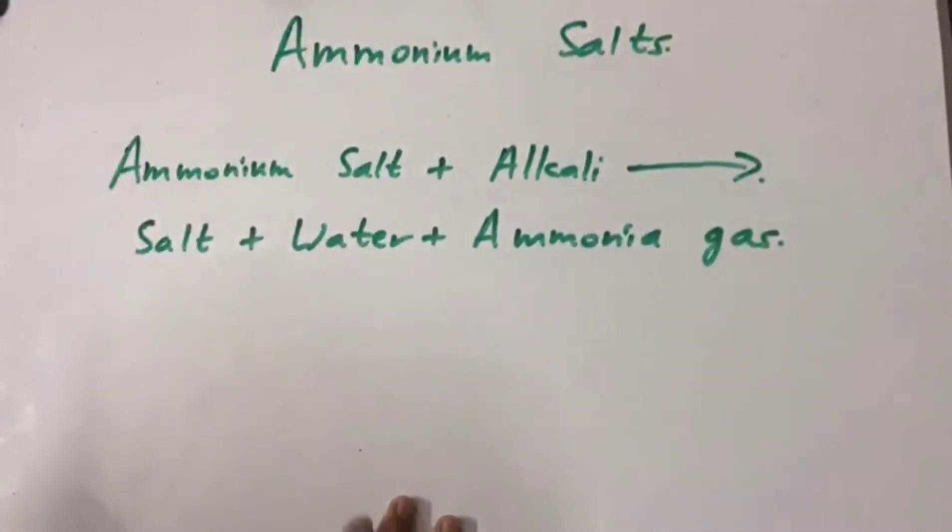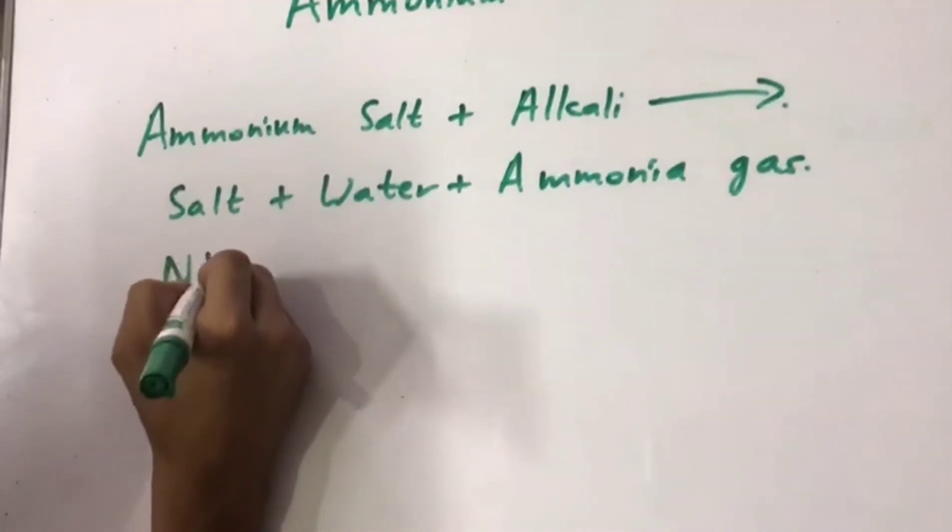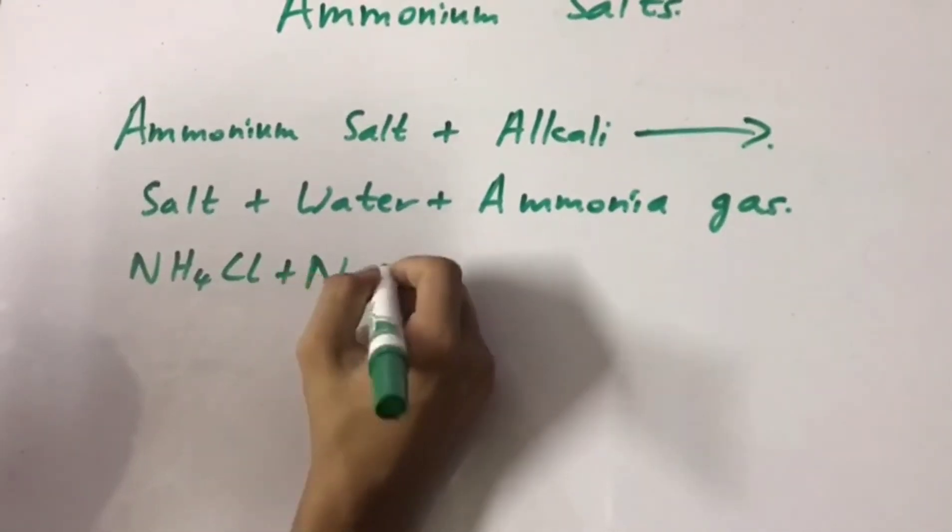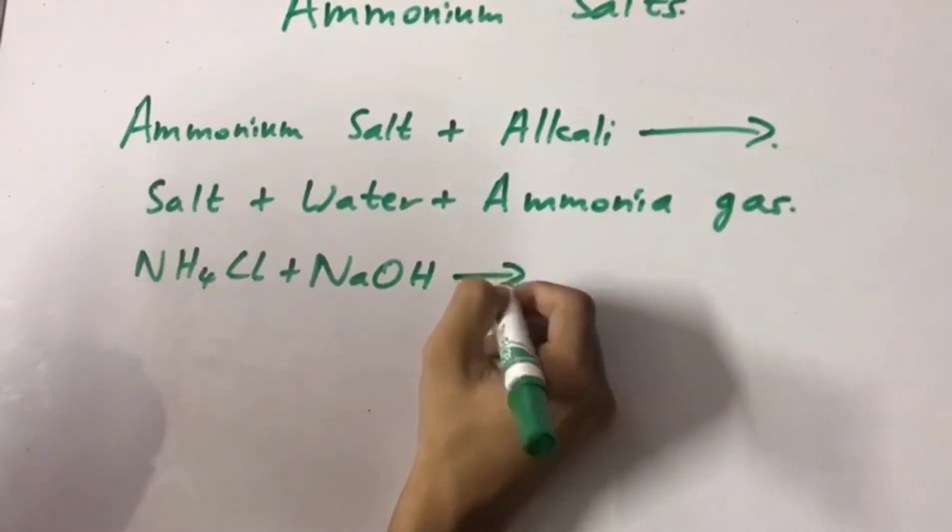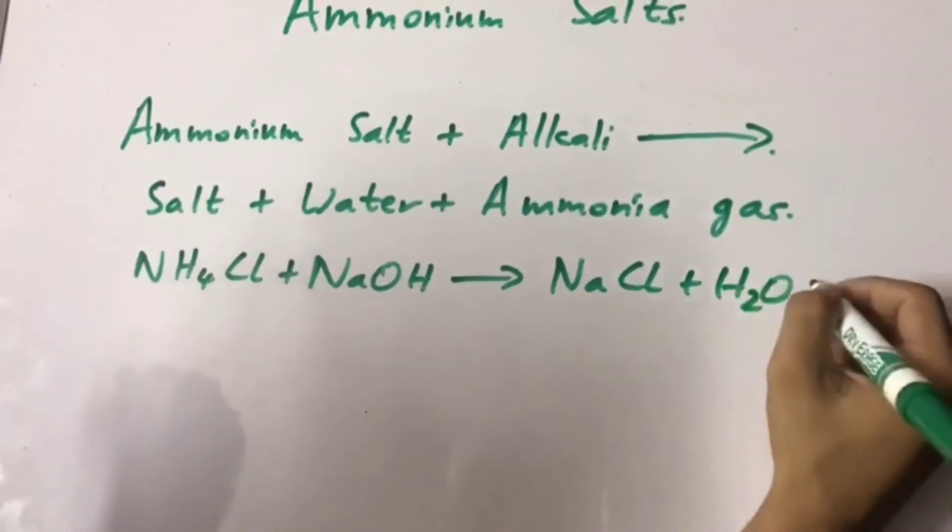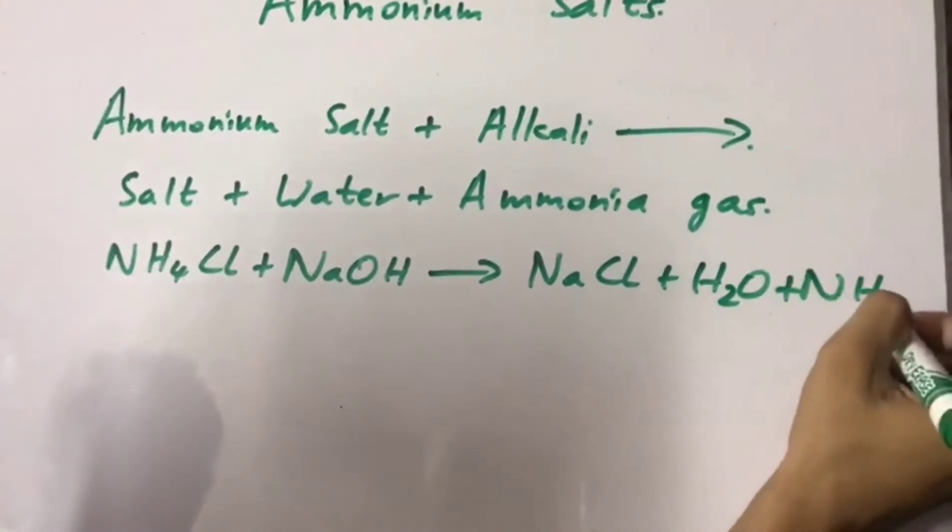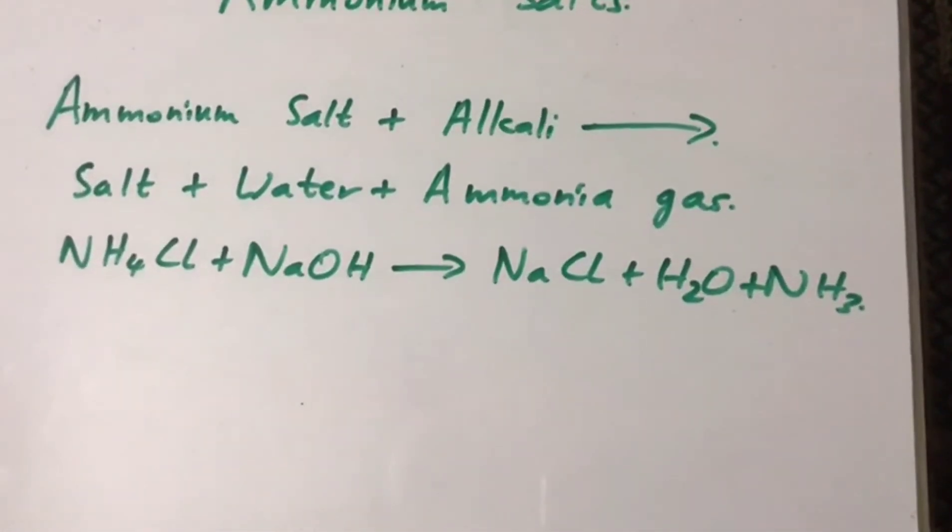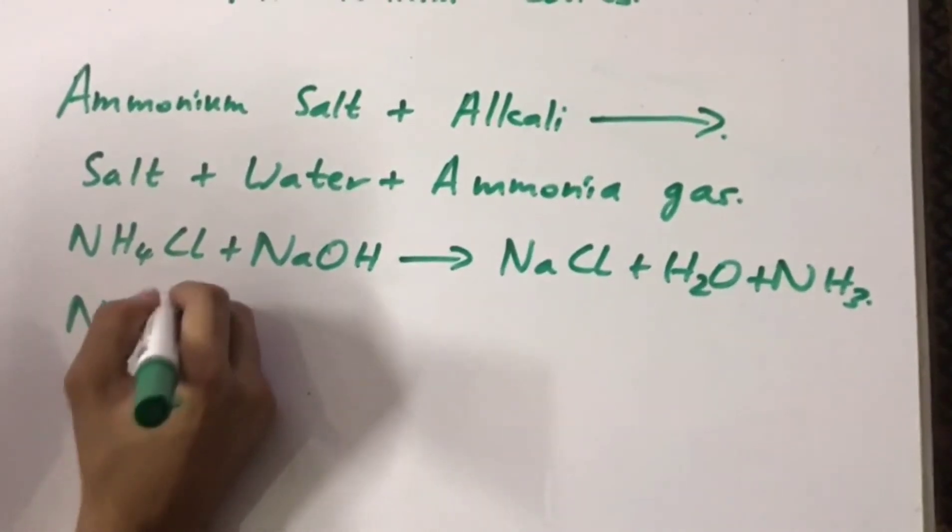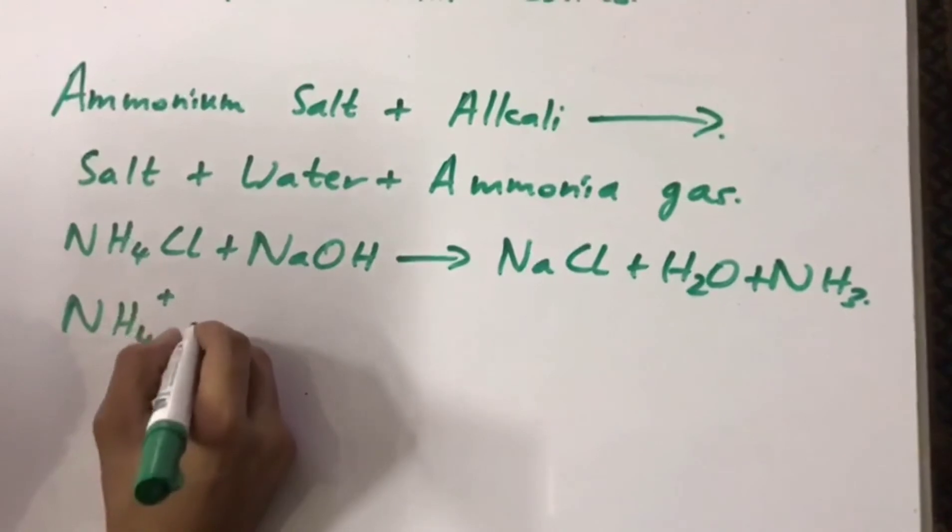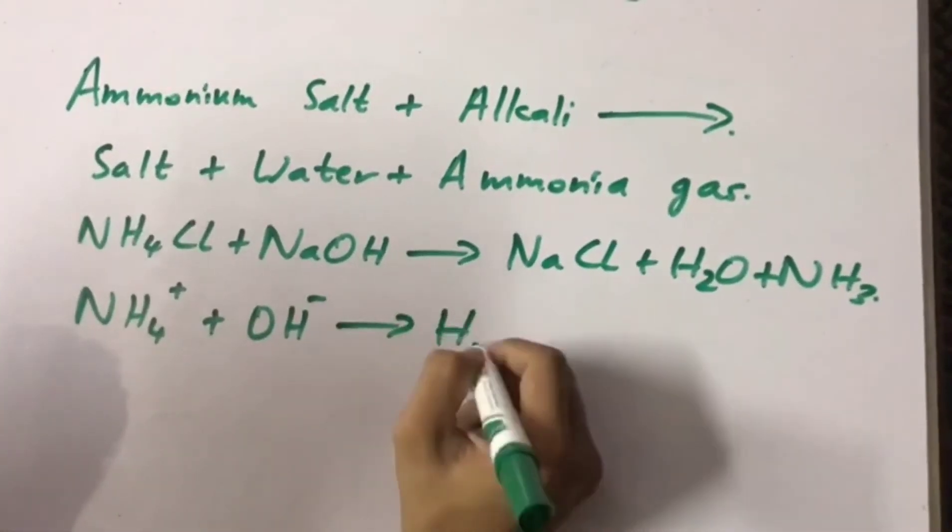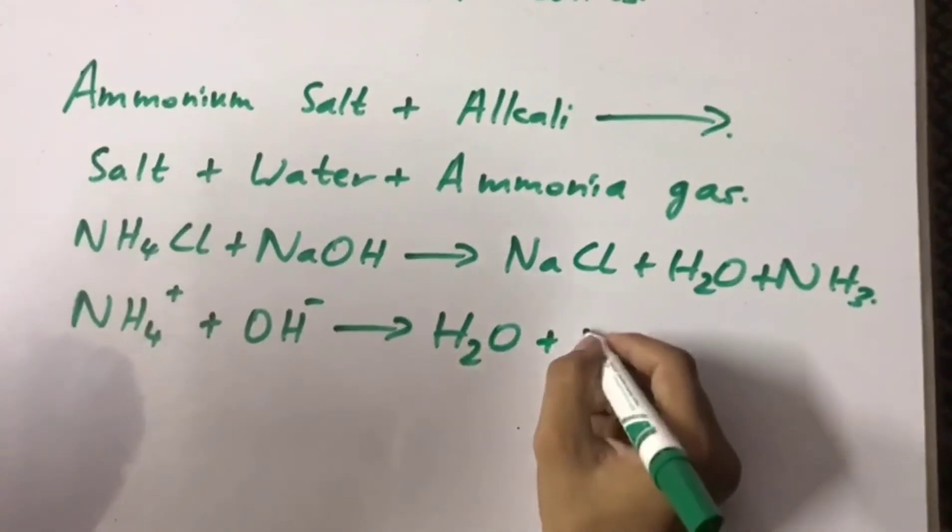For example, ammonium chloride plus sodium hydroxide produce sodium chloride plus water plus ammonia gas. The ionic equation for this reaction would be ammonium ion plus hydroxide ion produce water plus ammonia.